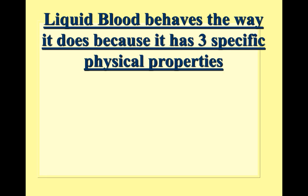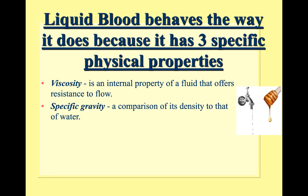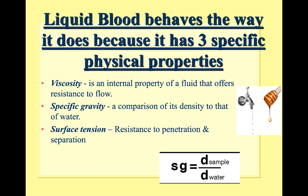The reason blood behaves the way it does is because of three specific physical properties. Viscosity means how resistant to flow something is — water is not viscous, honey is very viscous. Specific gravity is a comparison of the density of a substance to the density of water; blood is more viscous so it has a higher specific gravity. Finally, surface tension is the resistance to penetration or separation — like when you land awkwardly jumping into a pool and it hurts.